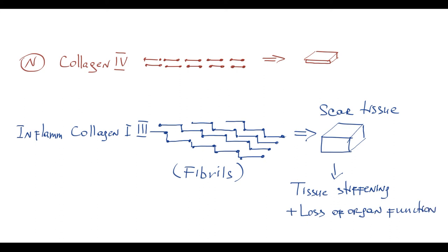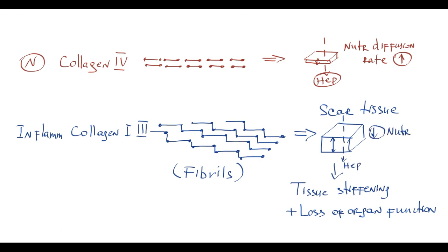In normal condition, extracellular matrix is very thin, and it's easy for nutrients from sinusoid vessels to diffuse through it to hepatocytes, so the nutrient diffusion rate is very fast. In cirrhosis, extracellular matrix is very thick, and it's very difficult for nutrients to diffuse through it — so there is a decrease in nutrient diffusion rate, leading to hepatocyte energy depletion. So basically, instead of fragile extracellular matrix that in normal condition serves metabolic purposes to maintain metabolic exchange between blood and hepatocytes, during inflammation hepatic stellate cells secrete very thick and dense extracellular matrix that serves protective purposes, primarily as a barrier to save hepatocytes from inflammation by forming regenerative nodules.